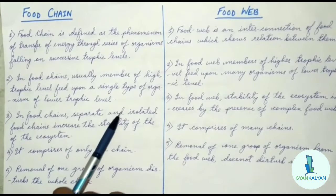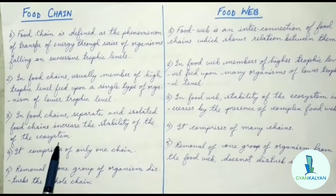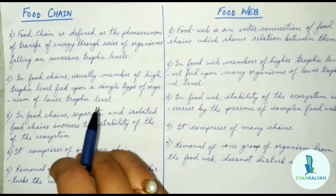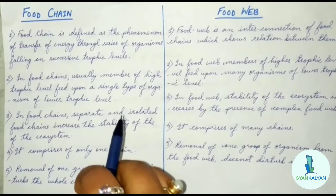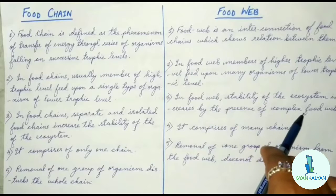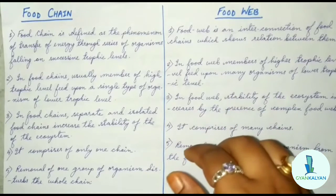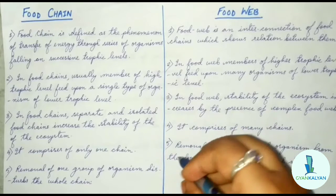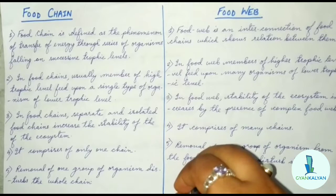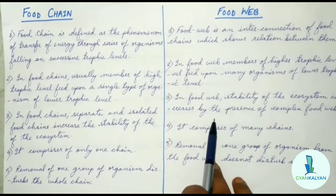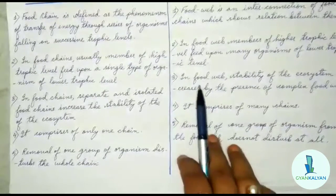In food chains, separate and isolated food chains decrease the stability of the ecosystem. A food chain has only one chain, so stability maintenance is limited because only a particular set of organisms is involved. In a food web, stability of the ecosystem increases due to the presence of complex food webs. It comprises of only one chain in a food chain, while a food web comprises of more than one chain — it can be two chains, three chains, four chains, or even more.